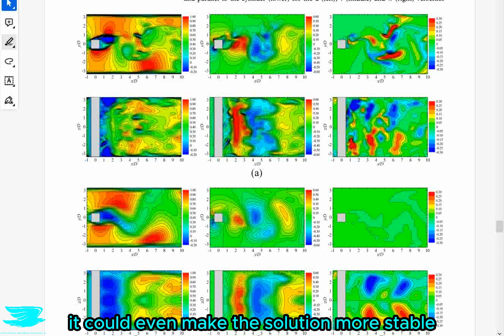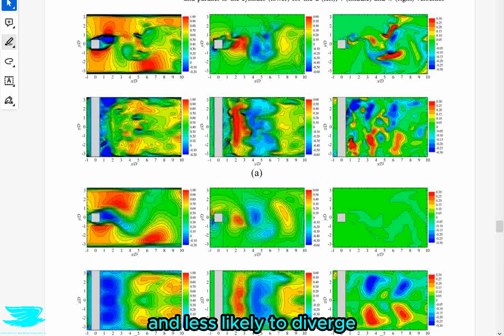With that, it is easy to expect more accurate simulations because you have more points to anchor your final solution, but also you'd expect the simulation to solve much quicker because you have more information guiding the solution. Also, you'd think that it could even make the solution more stable and less likely to diverge.